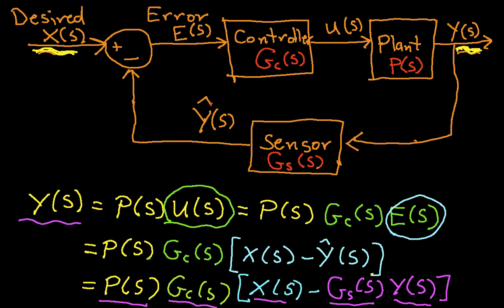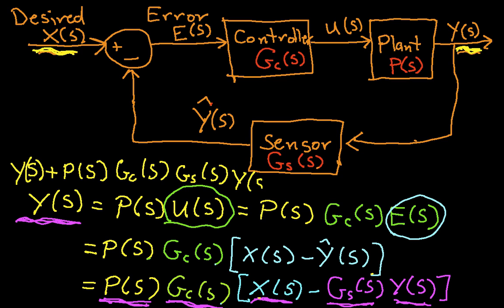So what we need to do now is solve this equation for Y of s. And we can do that by noticing that we have P of s times Gc times Gs times Y of s, taking that term and moving it over to the left-hand side of the equation, leaving this P of s Gc of s times X of s on the right-hand side. And when we do that, let's see, we get Y of s plus P(s) Gc of s Gs of s Y of s is equal to P(s) Gc(s) X(s).